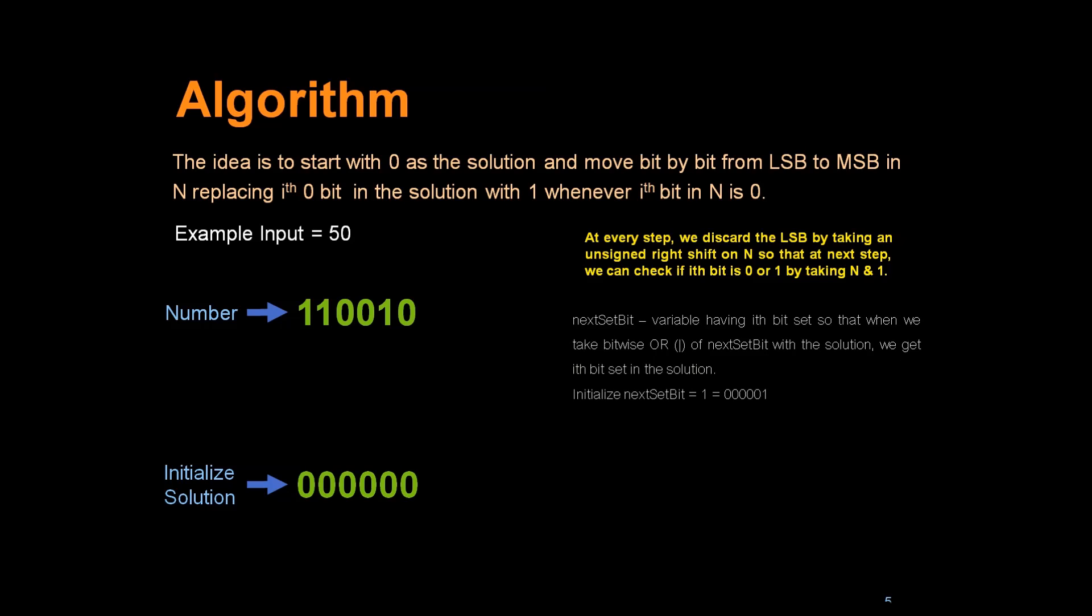Now we will take one variable, next set bit. This variable will have ith bit set so that when we take bitwise OR of next set bit with the solution, we get the ith bit set in the solution. Basically, whenever we want to set the ith bit, we will be making use of next set bit. We will be doing an OR of next set bit with our solution.